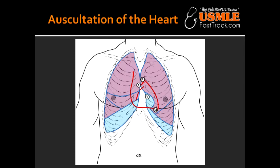What type of murmurs can be heard at the tricuspid area? The murmurs include pansystolic murmur and diastolic murmur. Conditions leading to pansystolic murmur include tricuspid regurgitation and ventricular septal defect. Conditions leading to diastolic murmur include tricuspid stenosis and atrial septal defect.